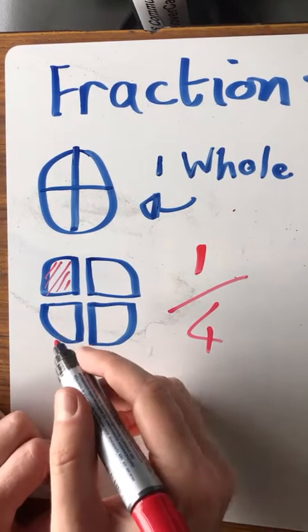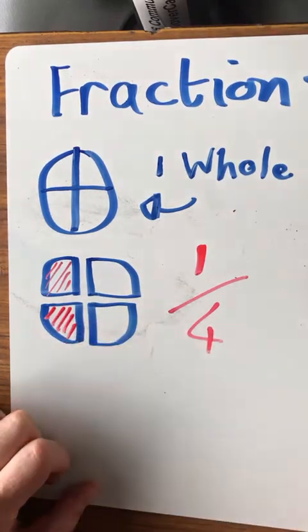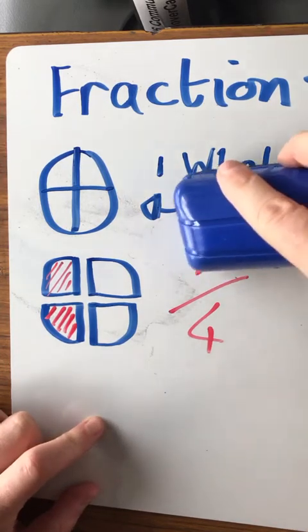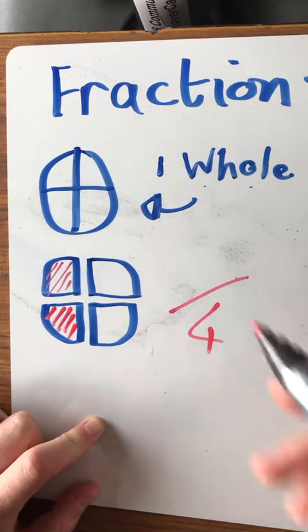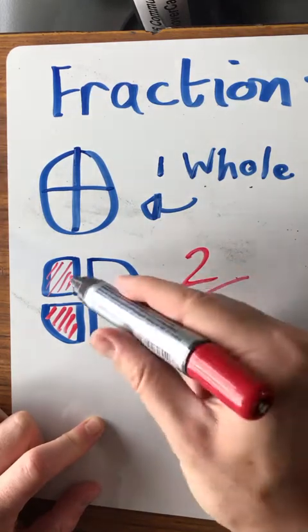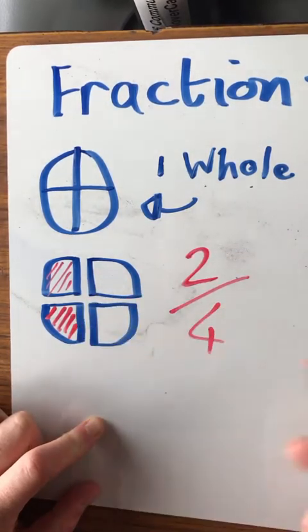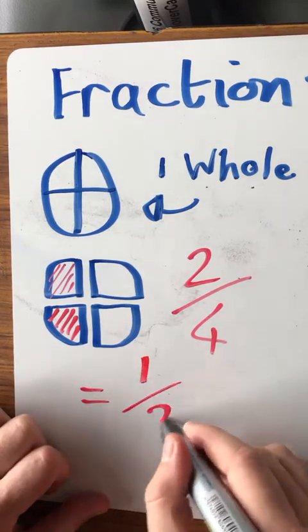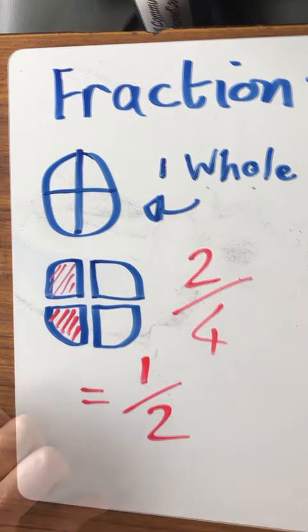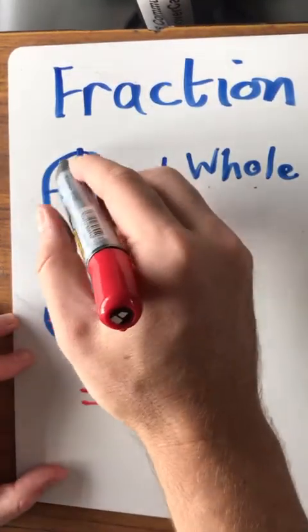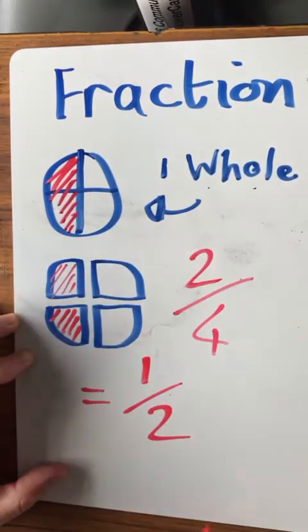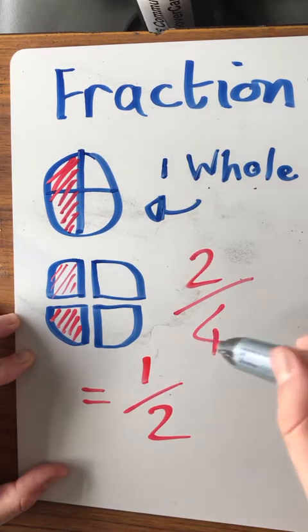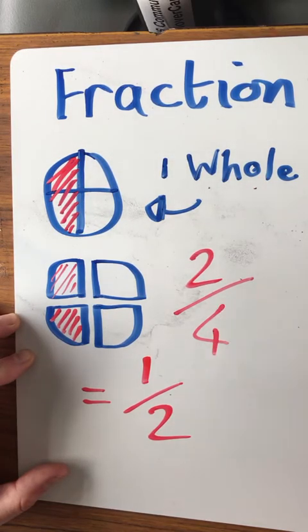If I have two pieces of cake, I not only have one part, I now have two pieces out of the four parts, which is also known as one half. So I have one half of the cake, also known as two fourths, which is also known as quarters.